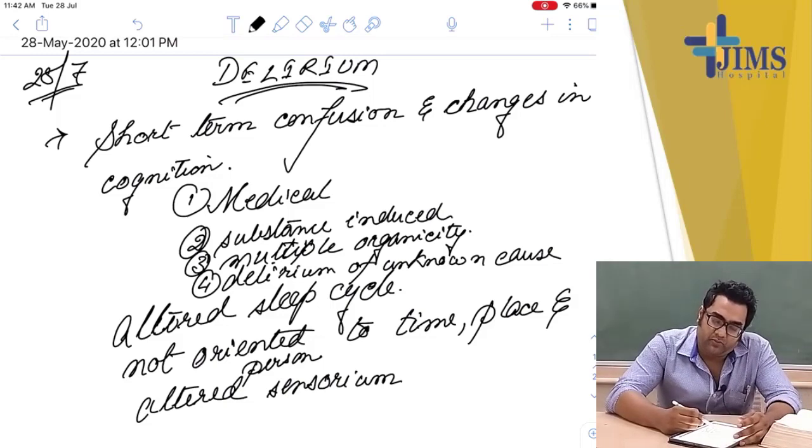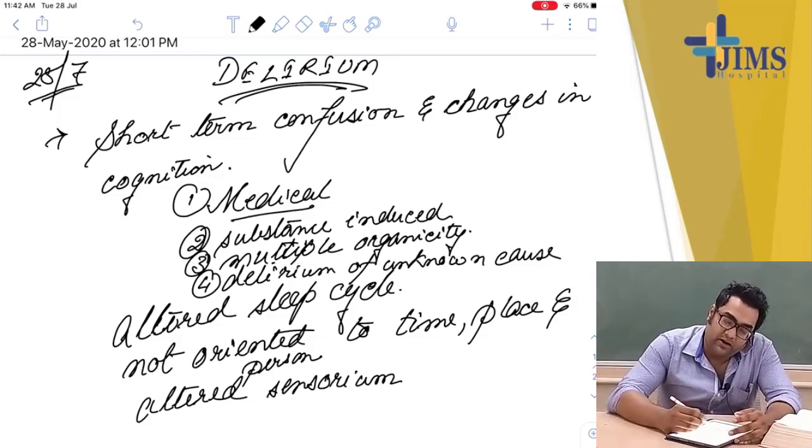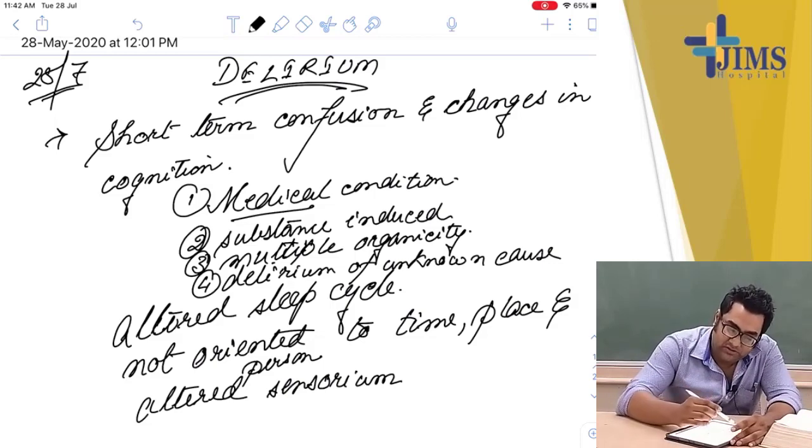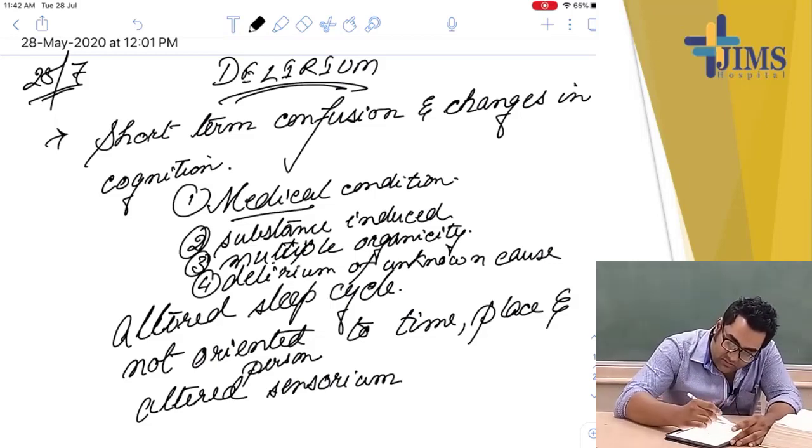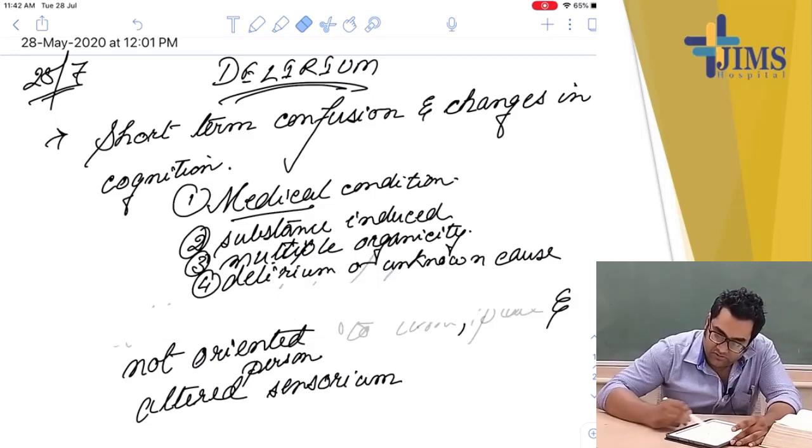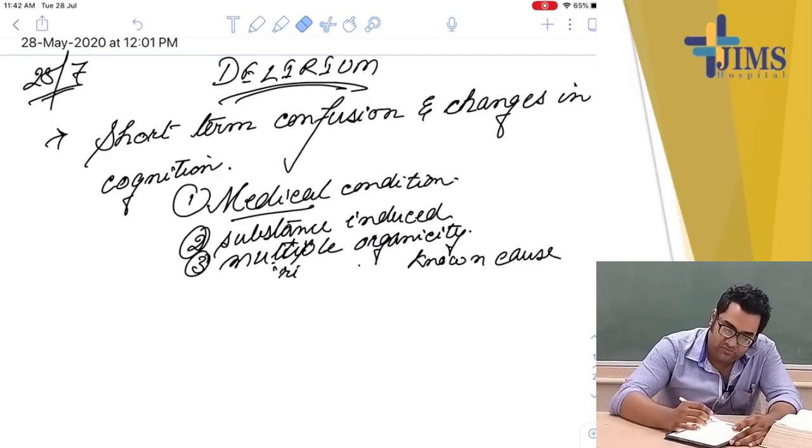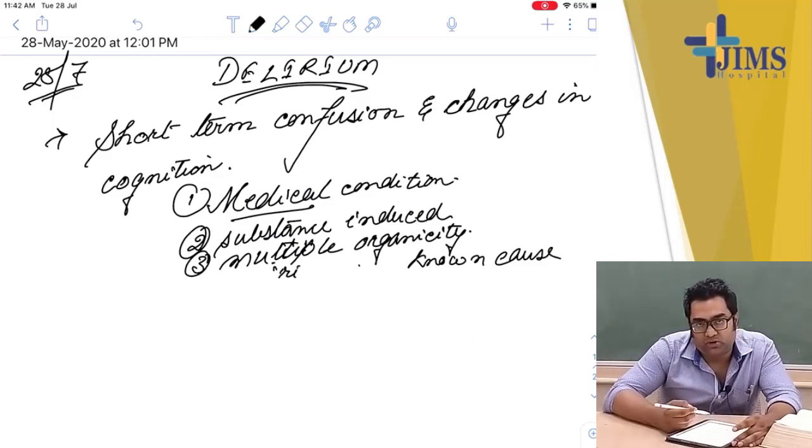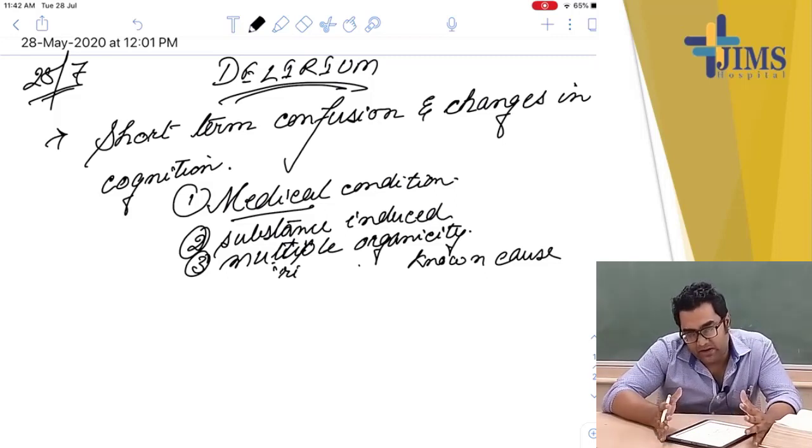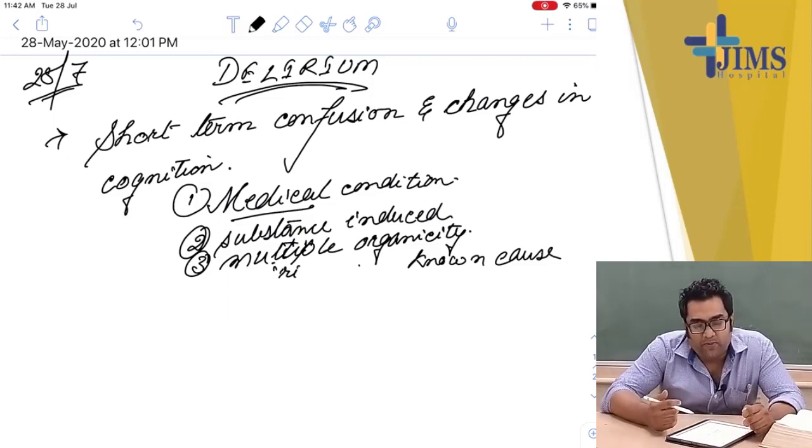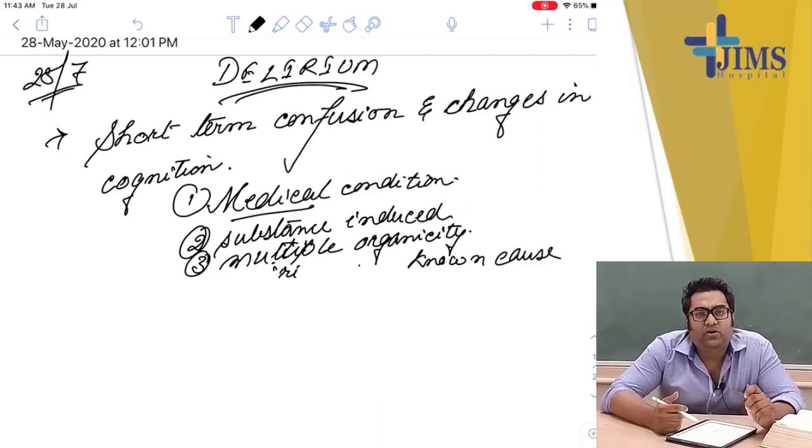In old days when there is electrolyte imbalance like sodium potassium imbalance, you will find the patient is behaving abnormally. They will be irritable, not oriented to time, place and person.